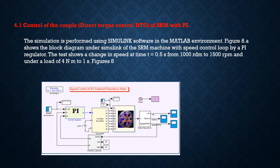Direct torque control, DTC, of SRM with PI — simulation is performed using Simulink software in the MATLAB environment. Figure 8 shows the block diagram under Simulink of the SRM machine with speed control loop by a PI regulator. The test shows a change in speed at time t equals 0.5 seconds from 1000 RPM to 1500 RPM, and under a load of 4 Nm at 1 second.